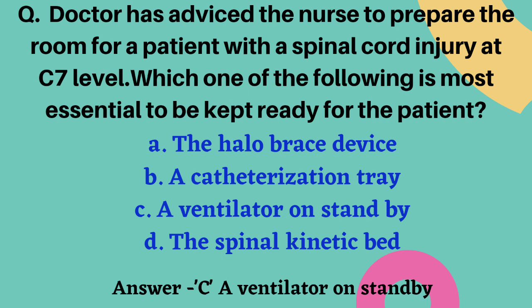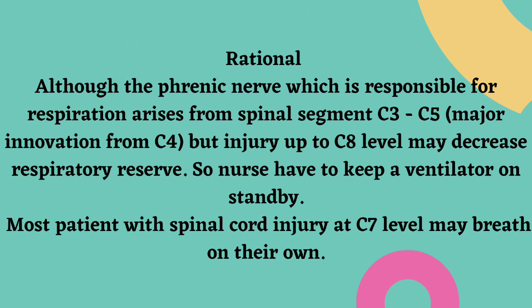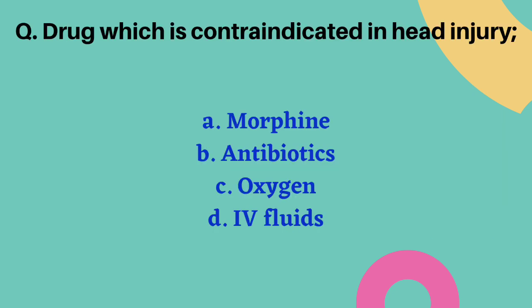The rationale: the phrenic nerve, responsible for respiration, arises from spinal segments C3 to C5, with the major origin at C4. If there is damage to C4, the person will go into respiratory arrest immediately. However, even up to C8, damage can lead to respiratory compromise, which is why a ventilator must be kept on standby.